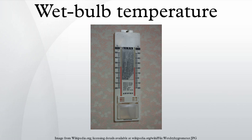Experimentally, the wet bulb thermometer reads closest to the thermodynamic wet bulb temperature when the sock is shielded from radiant heat exchange with its surroundings, air flows past the sock quickly enough to prevent evaporated moisture from affecting evaporation from the sock, and the water supplied to the sock is at the same temperature as the thermodynamic wet bulb temperature of the air. In practice, the value reported by a wet bulb thermometer differs slightly because the sock is not perfectly shielded from radiant heat exchange, airflow rate past the sock may be less than optimum, and the temperature of the water supplied to the sock is not controlled.